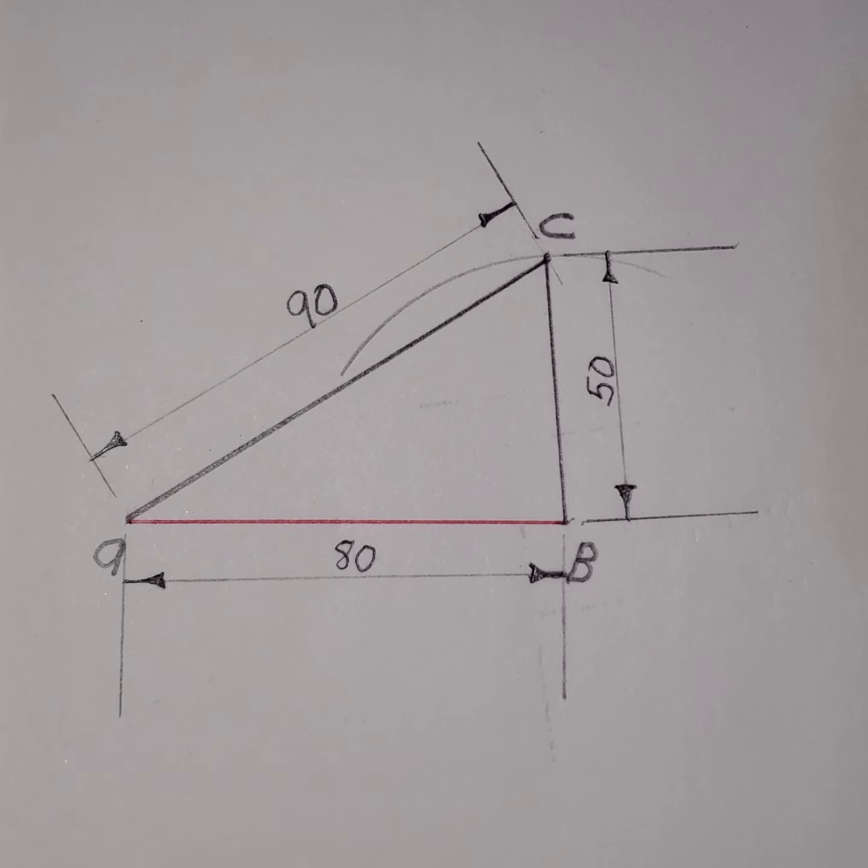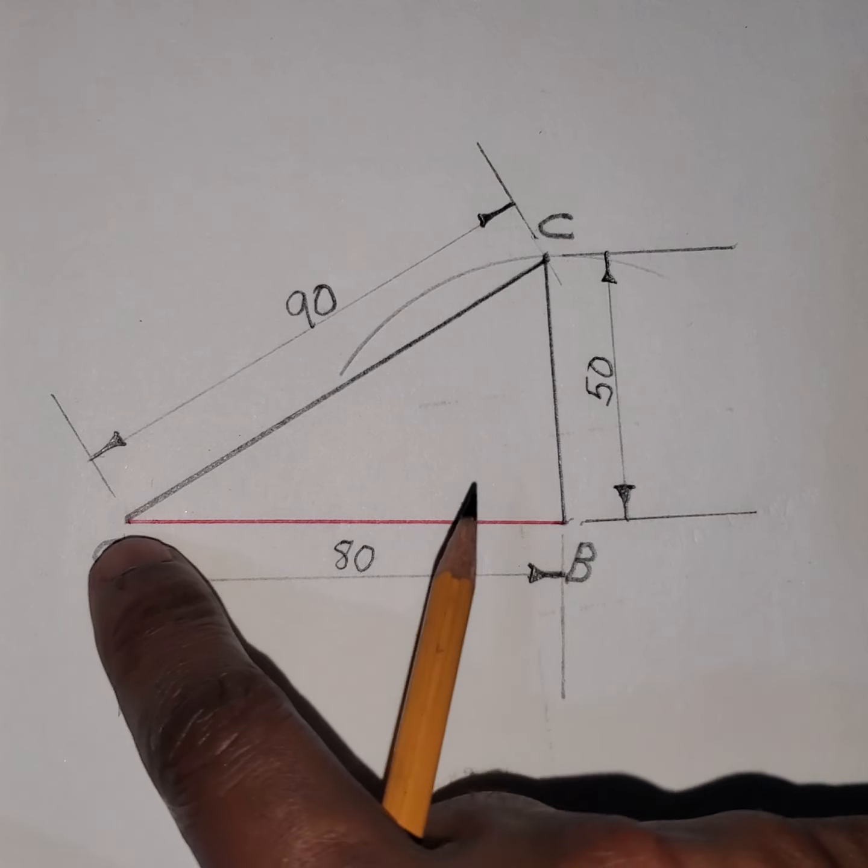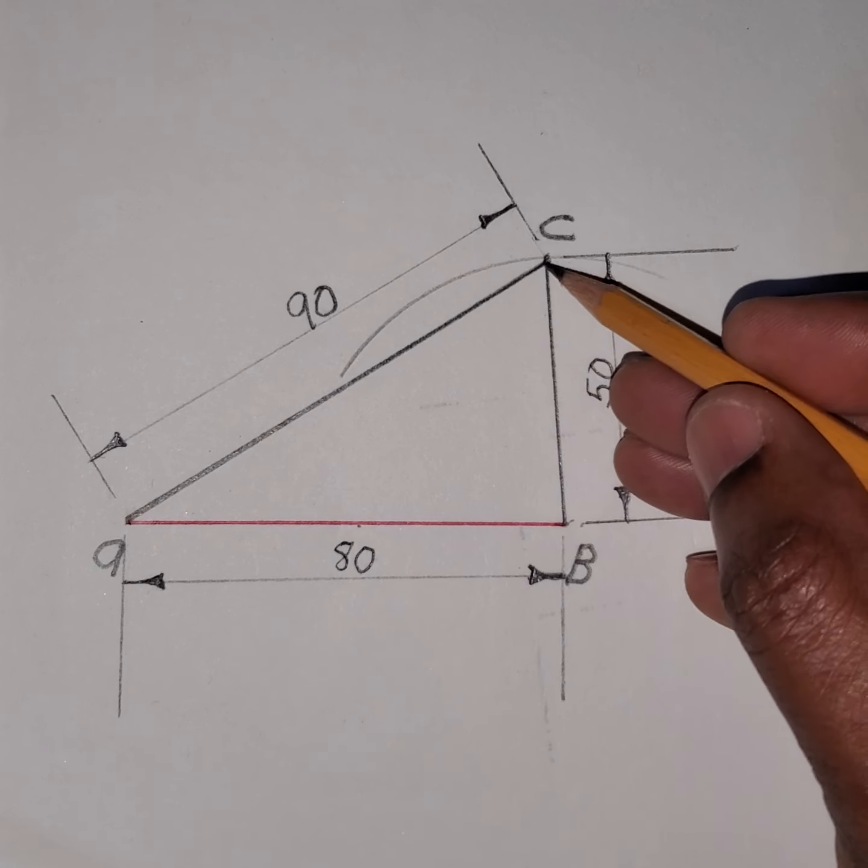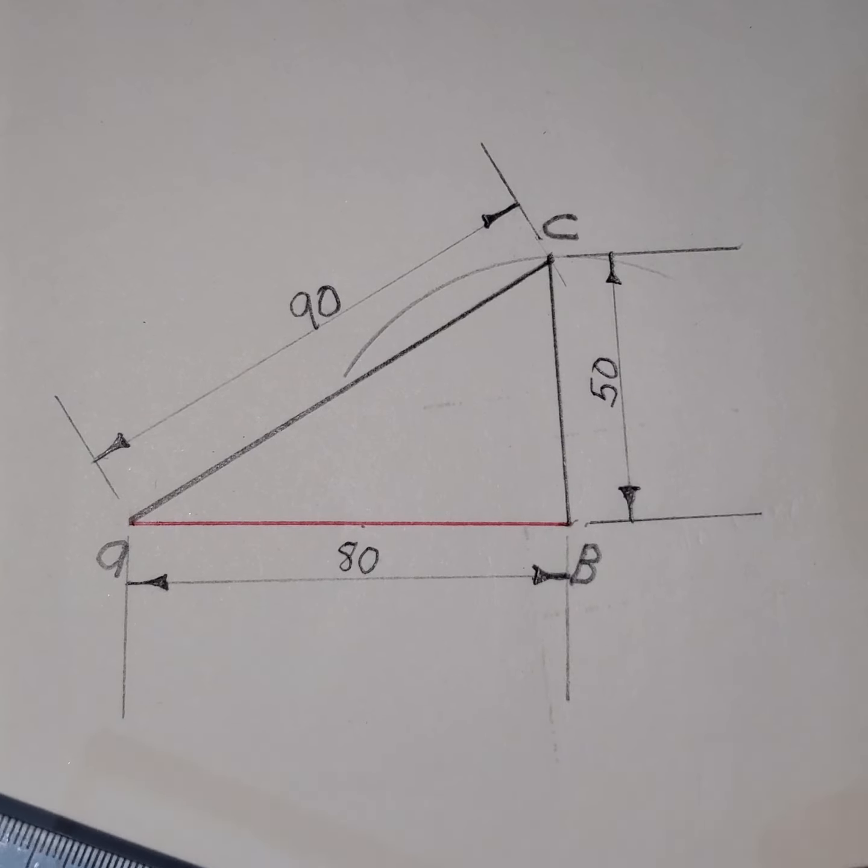To find the centroid of a figure we need to draw a line from the center of a side to the adjacent angle from any two sides.